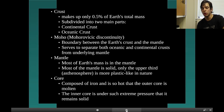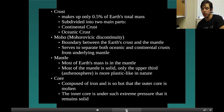The crust makes up only 0.5% of Earth's total mass. It is subdivided into two main parts: the continental crust and the oceanic crust. The Mohorovičić discontinuity is a boundary between the Earth's crust and the mantle, serving to separate both oceanic and continental crust from the underlying mantle.